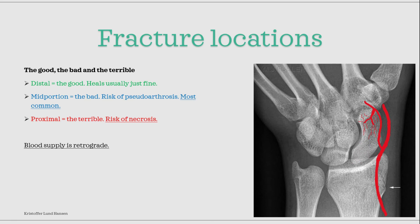The reason why these fractures are named as such is because the blood supply to the scaphoid occurs retrogradely. The distal portion is the best vascularized, while the proximal one has the least vascularity. That's why proximal fractures have a much higher risk of complications. Distal fractures typically have few complications and heal just fine. Middle fractures heal quite well too, but there is a risk of developing pseudoarthrosis. For proximal fractures — the most terrible — a fracture can cut off the blood supply to that part, and without blood, that part of the bone will die by necrosis.